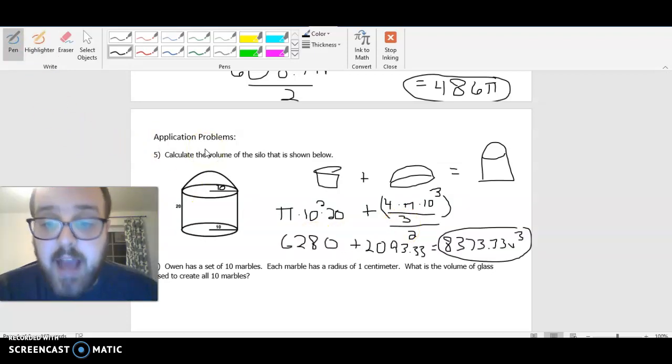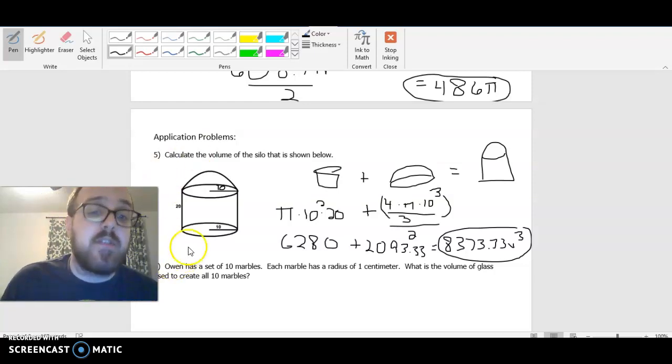All right, so hopefully you went ahead and calculated, and you got 8,373.33, or a third, pretty much is what we got. And that's, I put u cubed to show units cubed. They don't actually tell us a unit for this. Whatever units it is, it's units cubed for that, okay?